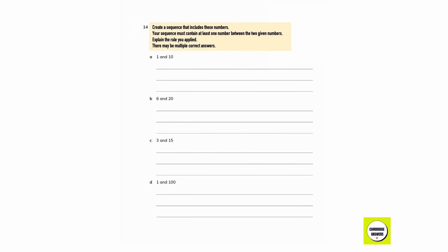Question number 14. Write a sequence containing the given numbers, with at least one number between the two given numbers, and describe the rule. There could be different answers. For 1 and 10: we can write 1, 3, 6, 10 — add 1 more each time. For 6 and 20: we can write 6, 13, 20 — add 7. For 3 and 15: we can write 3, 6, 9, 12, 15 — add 3.